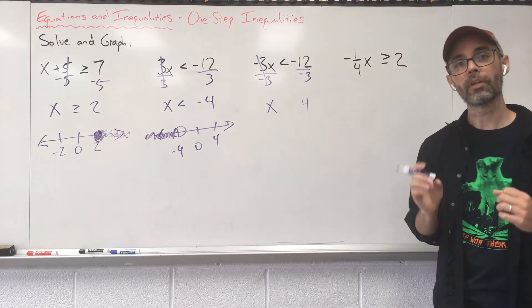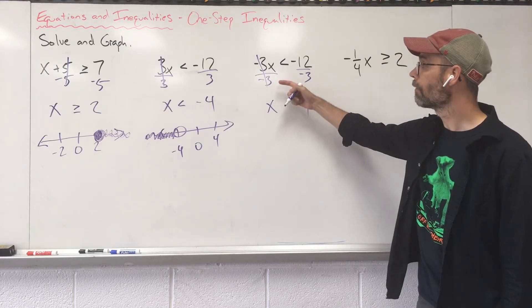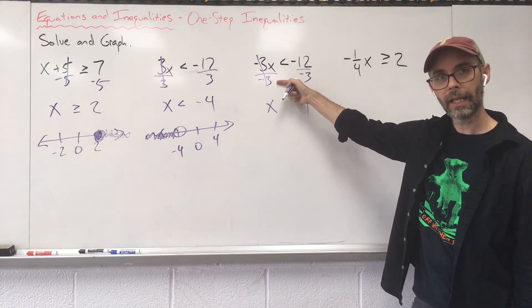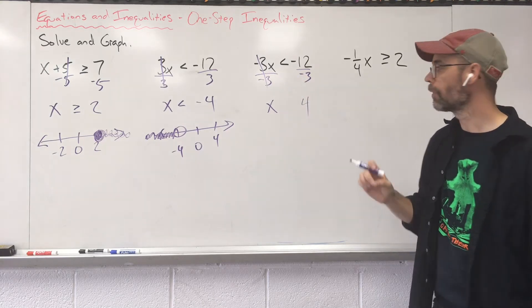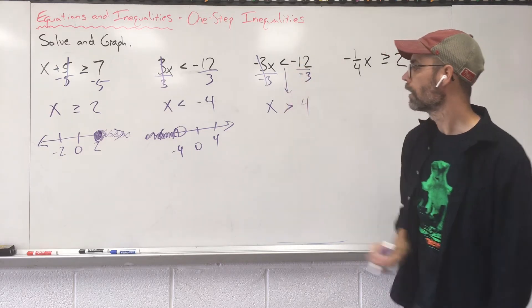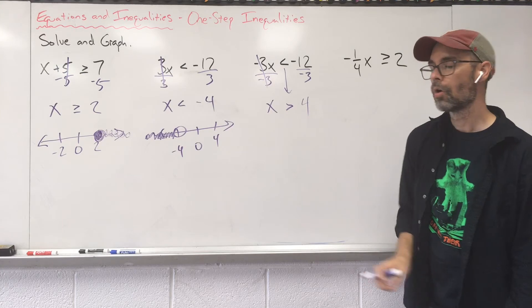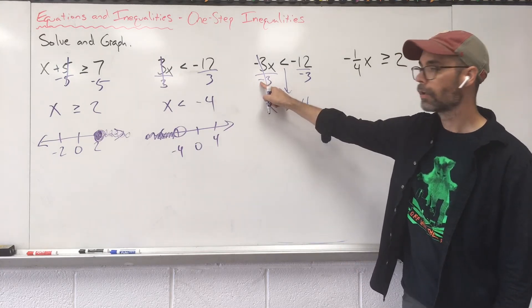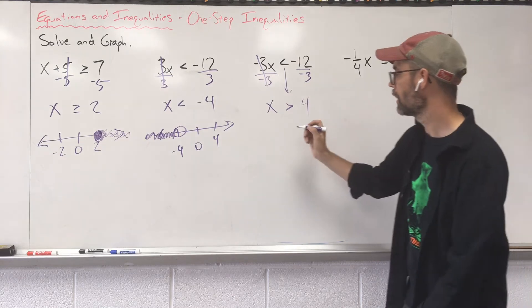Why didn't I put the inequality symbol there? Because whenever you divide by a negative, you have to flip the inequality. This symbol comes down and it goes the other way now. Whenever you multiply or divide by a negative, we have to flip the inequality.